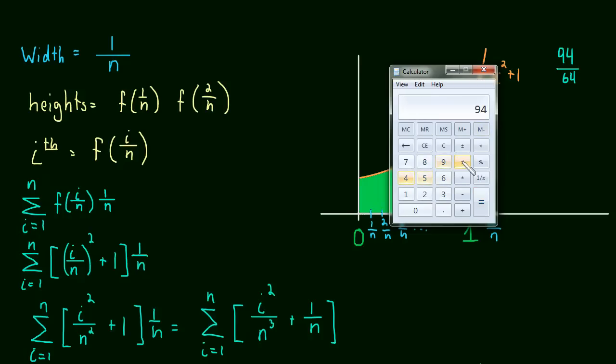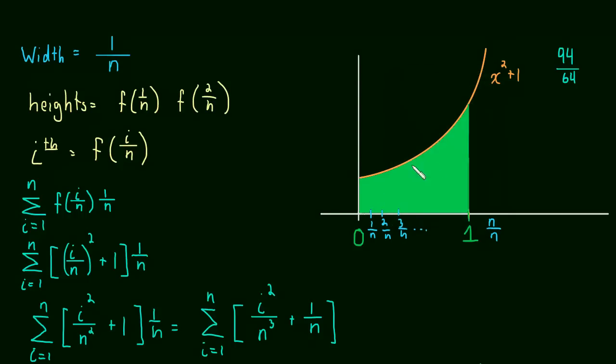What is 94 divided by 64? So 94 divided by 64, that was our estimate, 1.46 something. So we were pretty close, using just four rectangles. But now we have a way to find the exact area.